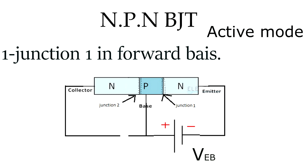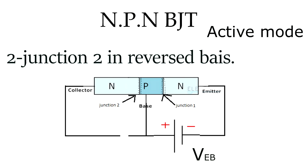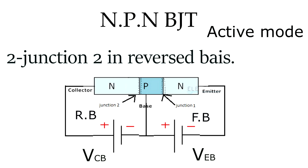We also need to make junction J2 reverse biased, so the collector (N) is connected to the positive terminal and the P is connected to the negative terminal. This reversed potential is called VCB. So junction J1 is forward biased and junction J2 is reverse biased — that's what we need to operate it in active mode.